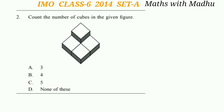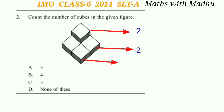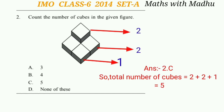Question 2: Count the number of cubes in the given figure. In the first row the number of cubes is 2, in the second row it is also 2, and in the third row it is 1. So the total number of cubes is 2 + 2 + 1 = 5. The correct answer is option C.